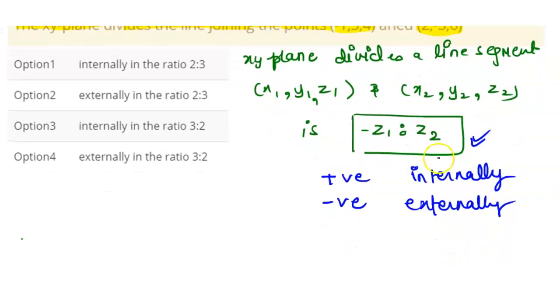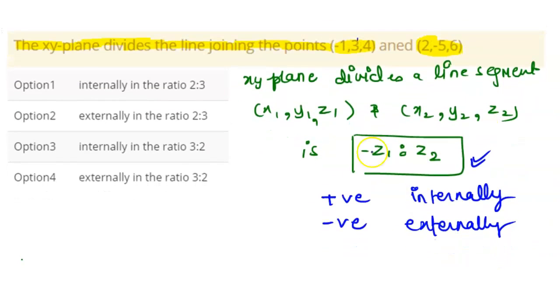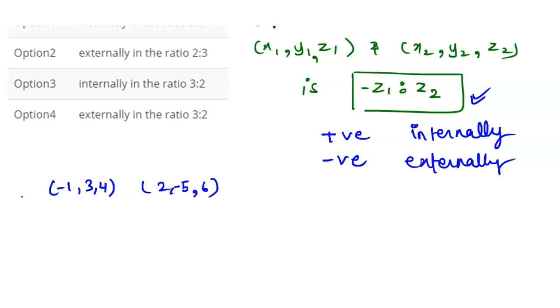So we will put our values here. So the points given to us are (-1, 3, 4) and (2, -5, 6). Right. So here Z1 is 4 and Z2 is 6. Right.